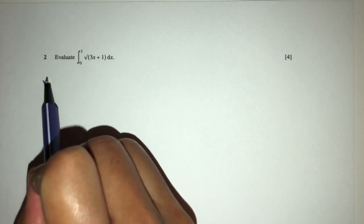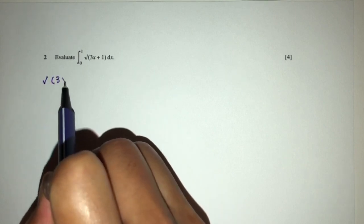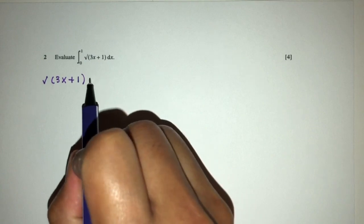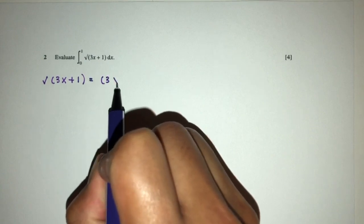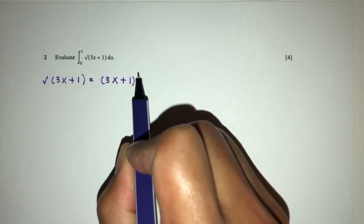So here what do we have? We have a square root of 3x plus 1. Now I understand that we can rewrite this as 3x plus 1 power half.